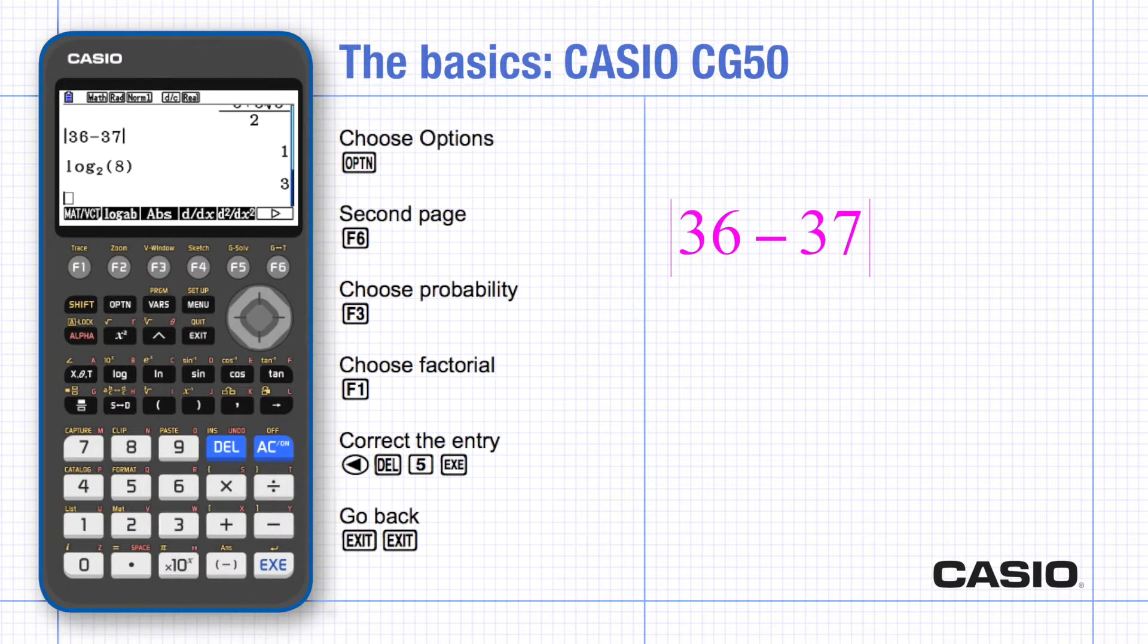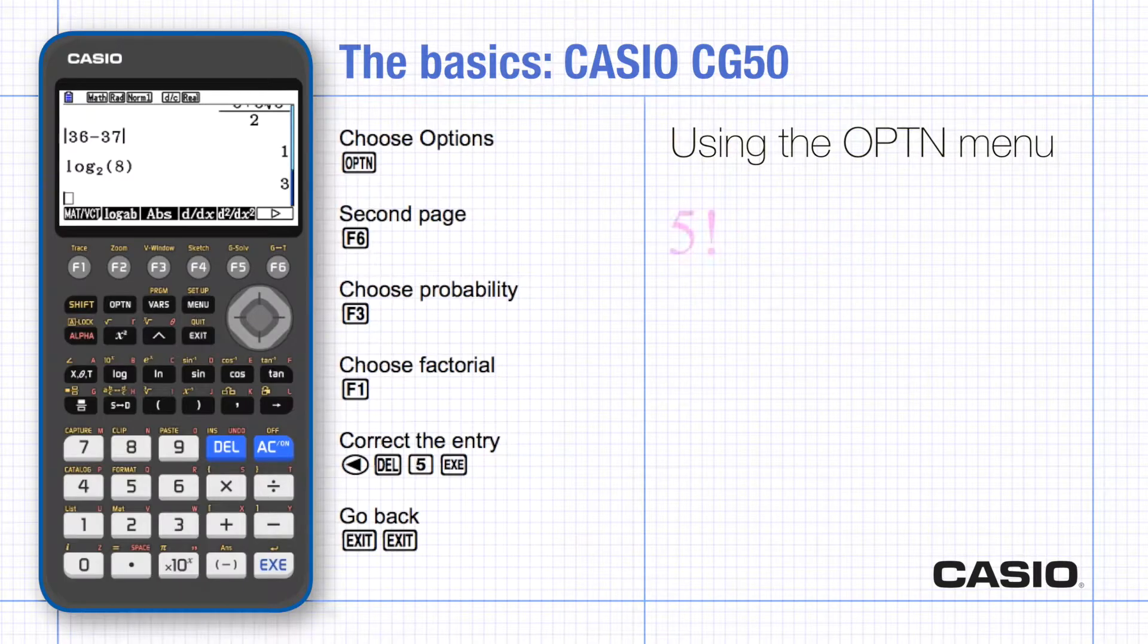Use exit if the next function you need is on a different menu. There are many other functions that you can access with the option key. Finding factorial is a good example of this.